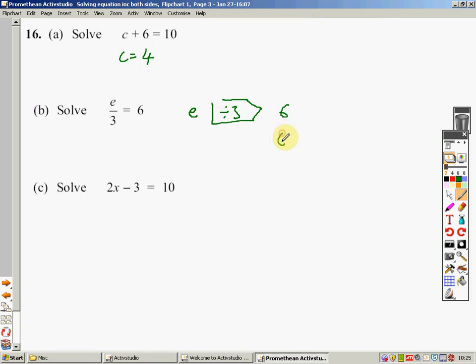E divided by 3 is 6. I will show you for this one. E divided by 3 gives me 6. So, working backwards, 6 times by 3 will give me E. 6 times 3 is 18. E equals 18. Make sure you've written that somewhere clearly.